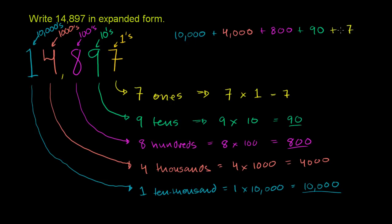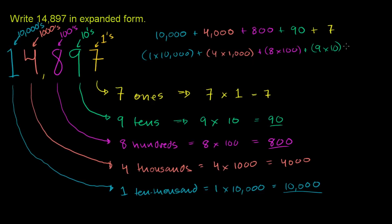So you could consider this expanded form, or you could use this version of it. Or you could say this is the same thing as 1 times 10,000, depending on what people consider it to be expanded form, plus 4 times 1,000, plus 8 times 100, plus 9 times 10, plus 7 times 1. Scroll to the right a little bit. Plus 7 times 1. So either of these could be considered expanded form.